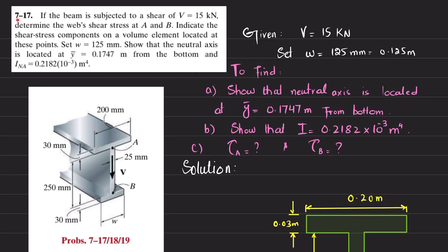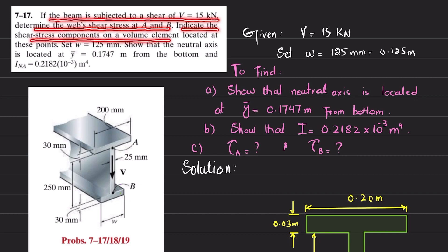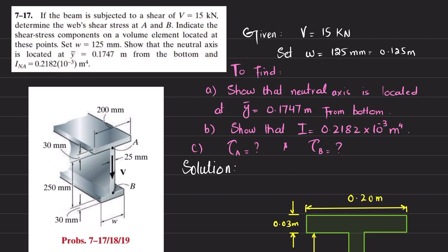Welcome back. Problem 7-17: if a beam is subjected to a shear of 15 kilonewton, determine the web's shear stress at A and B, indicate the shear stress component on a volume element located at these points. Set w equal to 125 millimeter. Show that the neutral axis is located at ȳ = 0.1747 meter from the bottom, and I about the neutral axis is given.